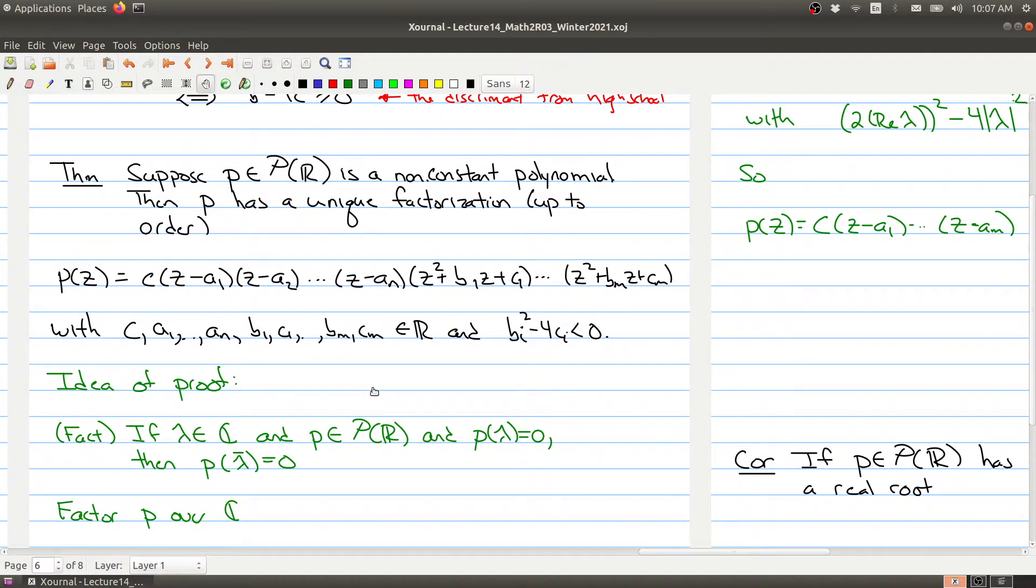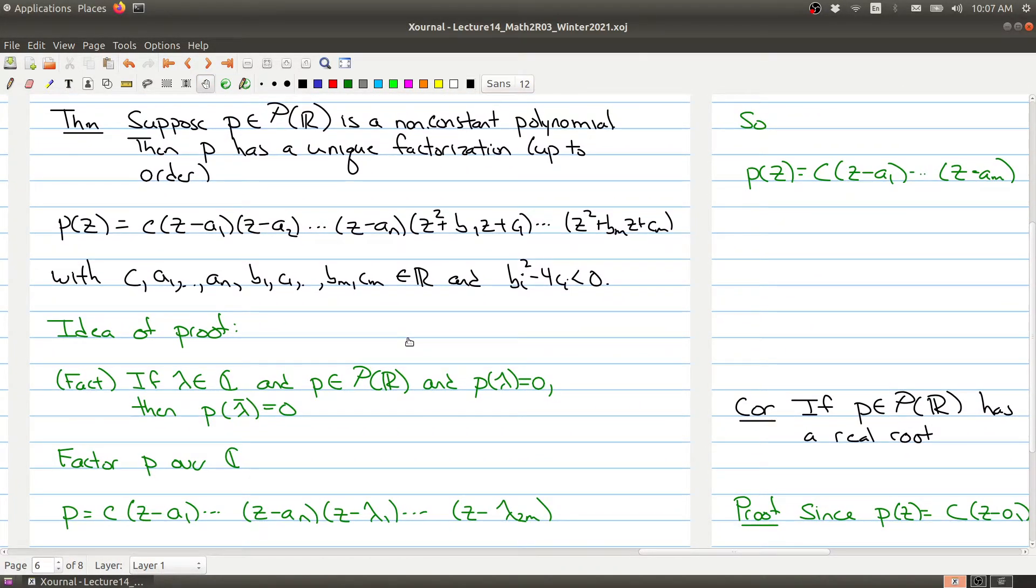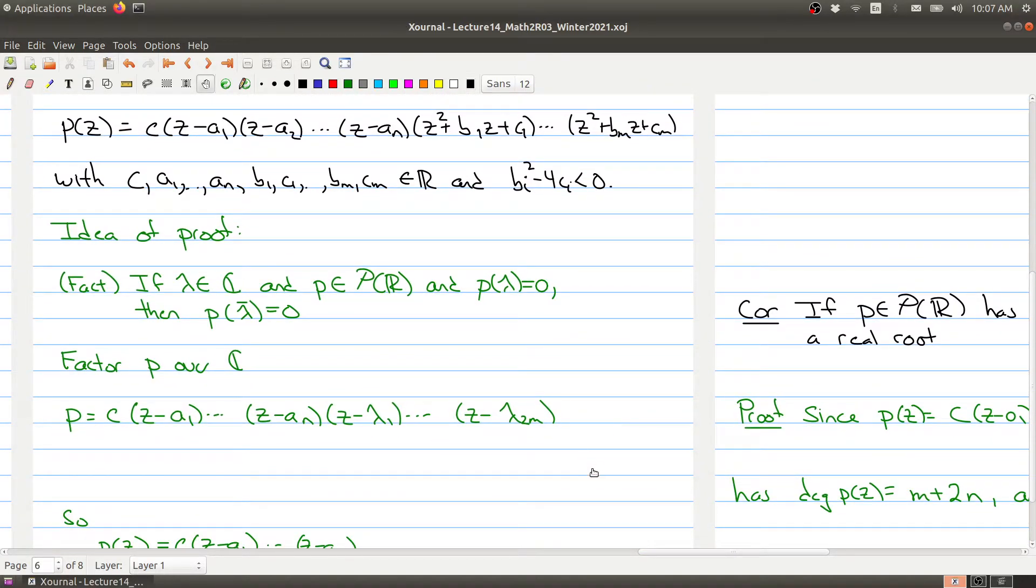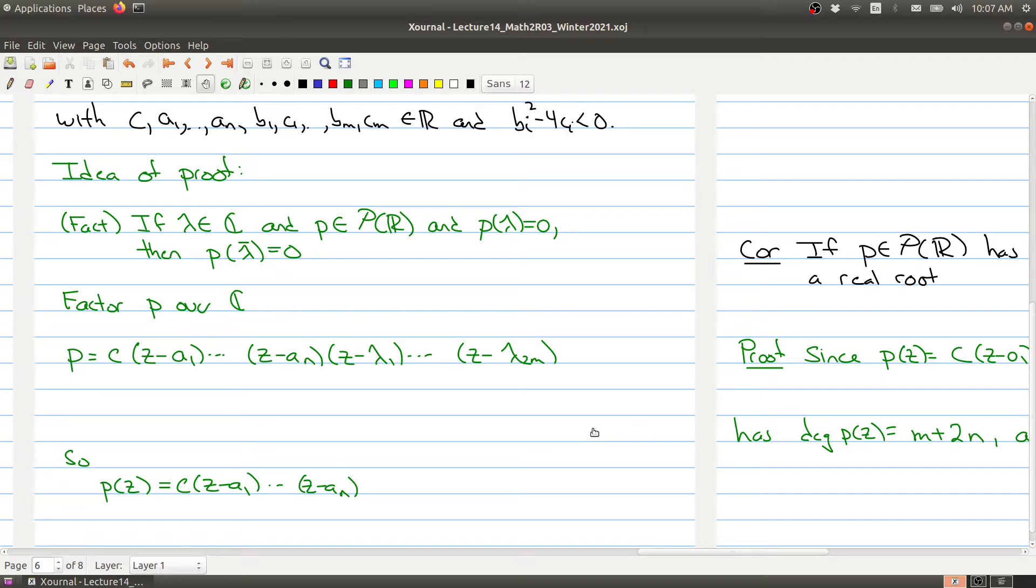So p can be factored into degree one and degree two terms if we restrict to being in the real numbers. I'll just give you a quick idea of the proof. You can see the proof in the textbook. The first thing that you need is the following fact: if you take a complex number and a polynomial whose coefficients are real numbers, and if the complex number is a root of that polynomial with real coefficients, then the complex conjugate is also a root. It's very important to notice that p has to have all real coefficients for this to work.